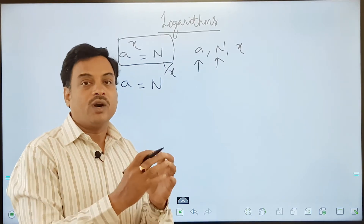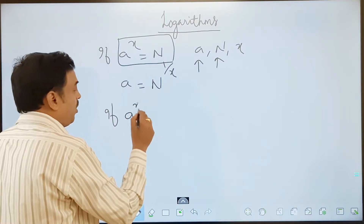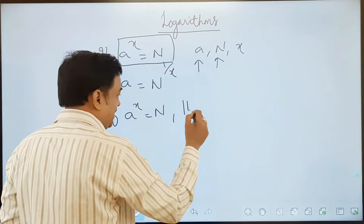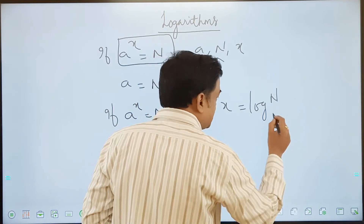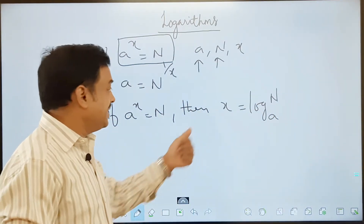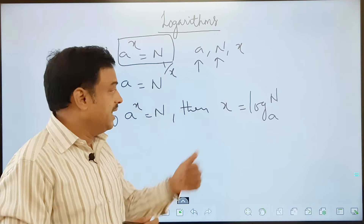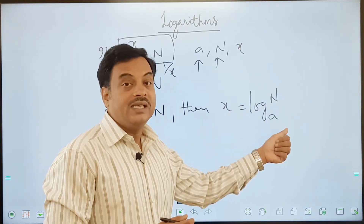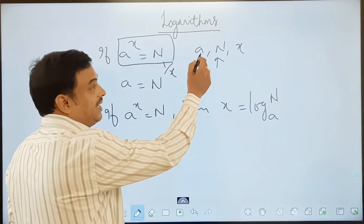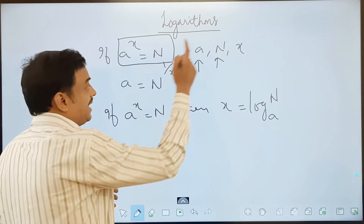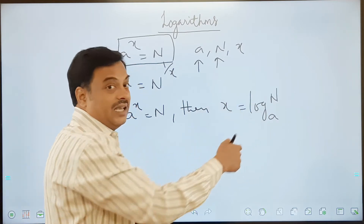So I want to know x in terms of a and n. In such cases, we use logarithms. Here we write: if a to the power of x is equals to n, then the power value, that is x, will be equal to log n base a. Now you are able to write x in terms of n and a. We read this as: log of a number with a base a. So we can write a in terms of n and x, n in terms of a and x, and also x in terms of n and a with the help of logarithms.